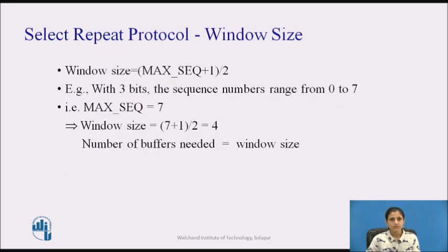In selective repeat, the maximum window size should be at most half the range of the sequence numbers. In general, the window size for selective repeat is (max_seq + 1) / 2. The number of buffers needed equals the window size. So with 3 bits, sequence numbers range from 0 to 7, max_seq = 7, window size = (7 + 1) / 2 = 4, and number of buffers needed is also 4.